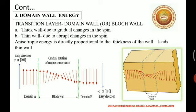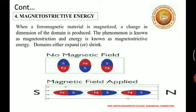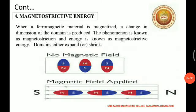The domain walls will either expand or shrink. That is, there will be a change in its dimension. So the dimension of the material will be changed when it is magnetized. That is known as magnetostrictive energy.